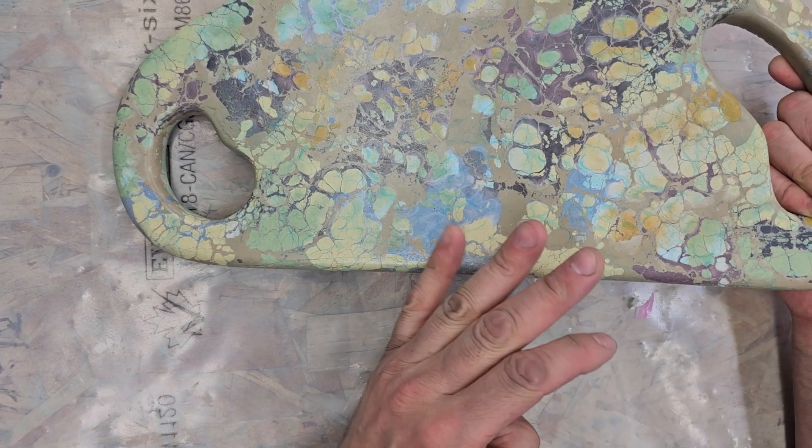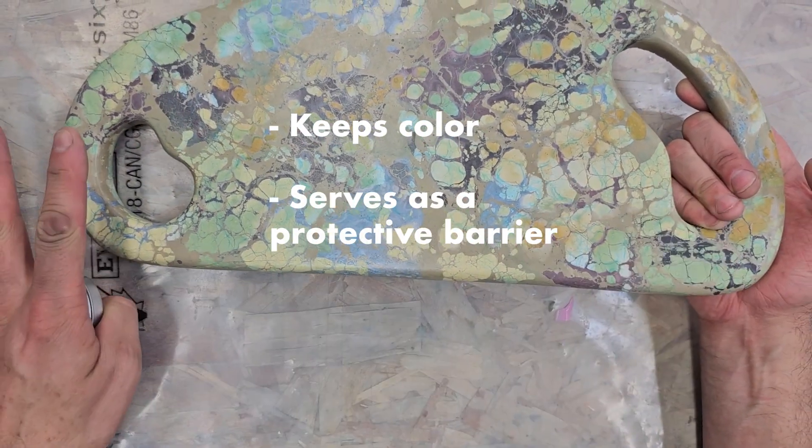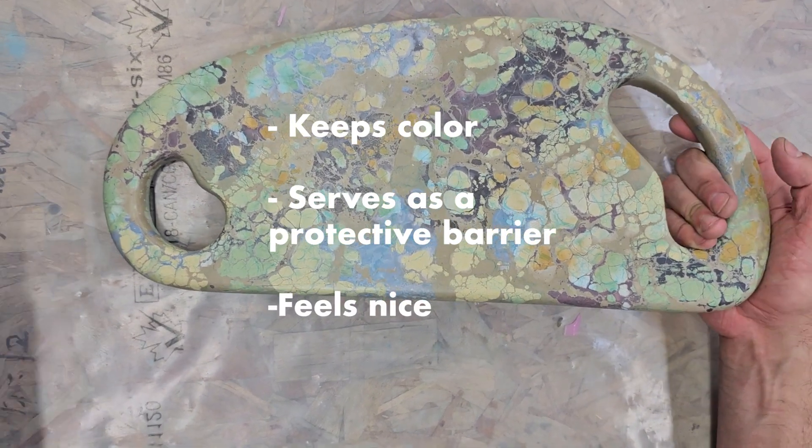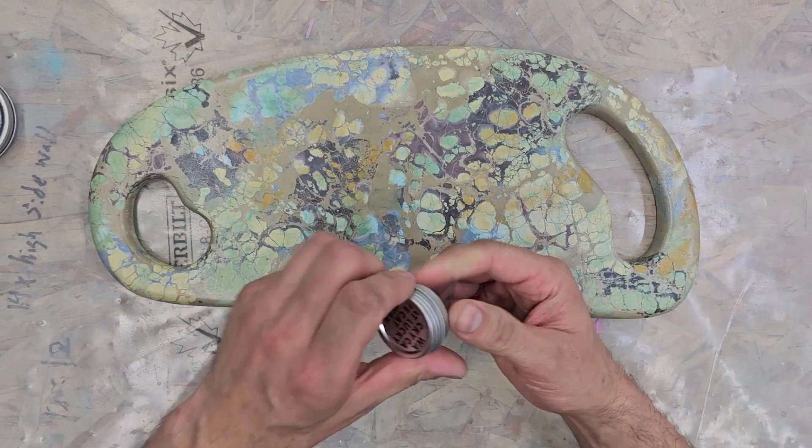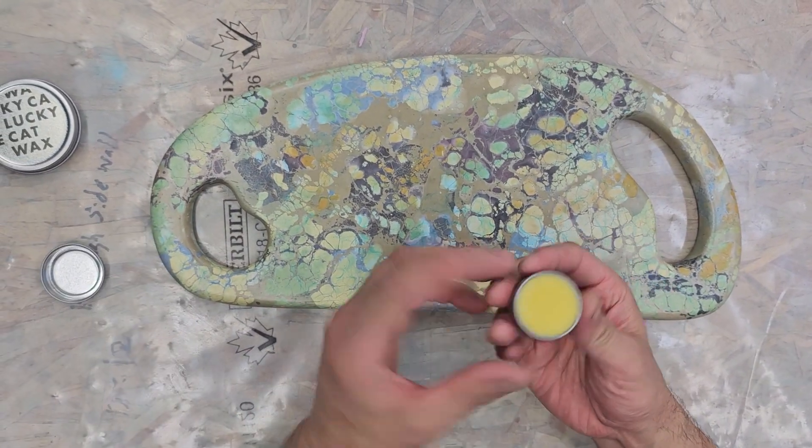The wax kind of gets your color a little bit deeper. It is a protective barrier over the surface. It gives you a little bit of luster. It's beautiful. It makes it feel nice. And it's made out of beeswax and carnauba and mineral oil. We make it in house.